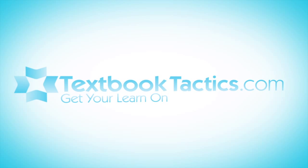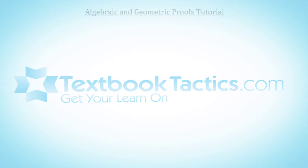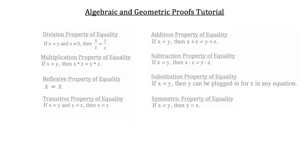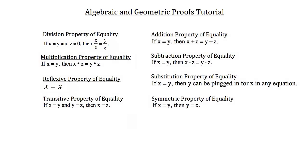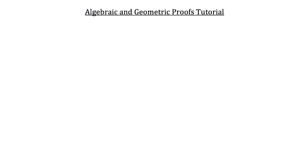This is the algebraic and geometric proofs tutorial. In this tutorial, we're going to talk about eight different properties of equality. You may have seen some of these in Algebra 1, but we're going to go over them and their implications for geometry. Rather than study all eight at once, we're going to do them four at a time.